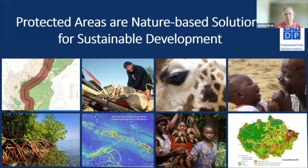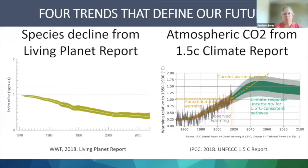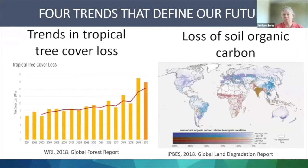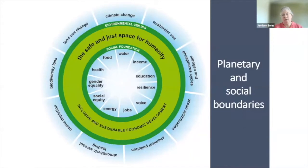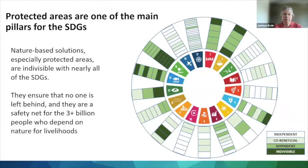Protected areas are nature-based solutions for sustainable development. We know from a number of reports that we are seeing sharp declines in species, a sharp rise in atmospheric CO2, increased tree cover loss, and loss of soil organic carbon. This means that we are at risk of leaving the safe and just space for humanity. Protected areas are one of several tools that will keep us in this safe and just space, and they are one of the main pillars for achieving the sustainable development goals. Nature-based solutions, especially protected areas and other effective conservation measures, are indivisible with nearly all of the SDGs. They ensure that no one is left behind and they are a safety net for the more than three billion people who depend on nature for their livelihoods.